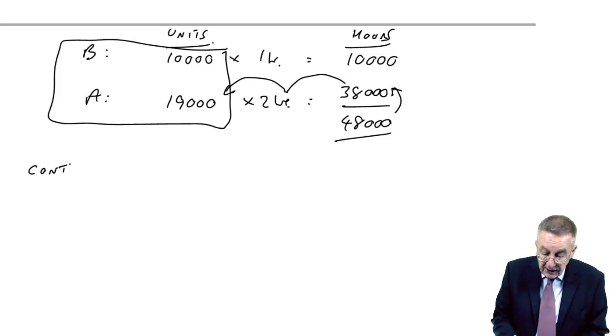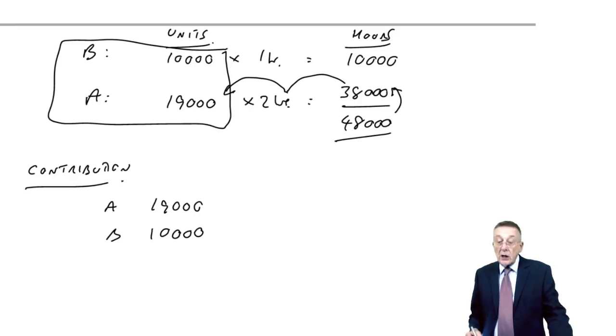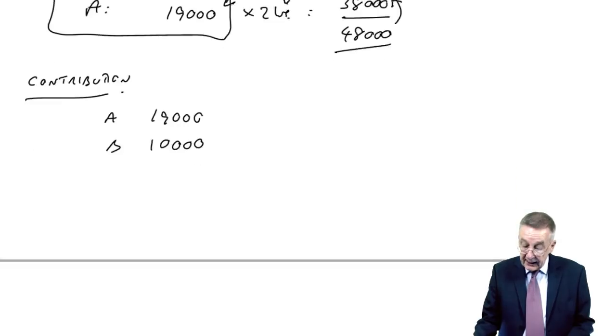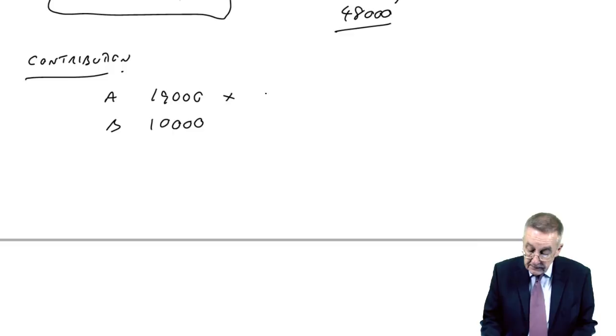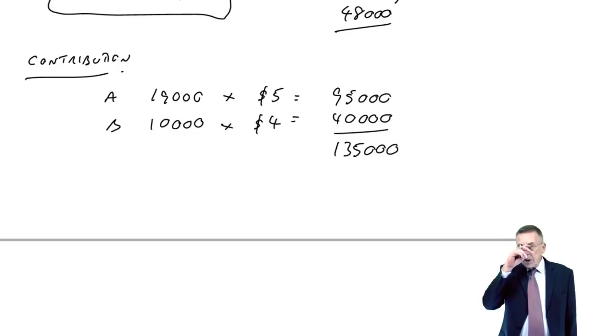Well, let's look first of all at the contribution. We're making 19,000 A's, 10,000 B's. And how much contribution are we earning per unit? Per unit, A gives $5 and B gives four. So 95, 40, 135. So there is the maximum contribution that we can earn.